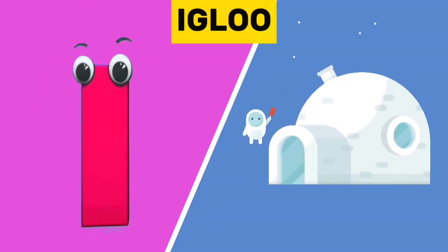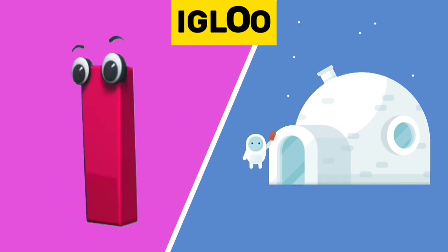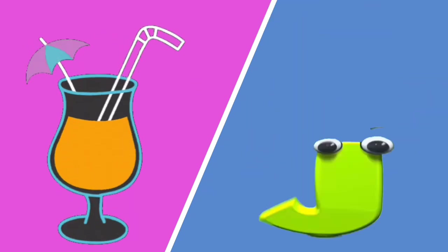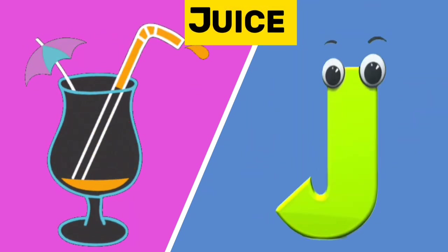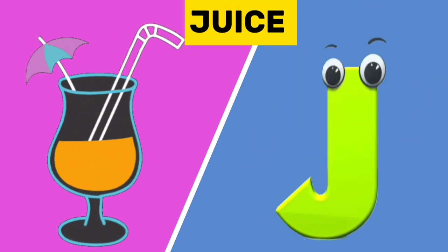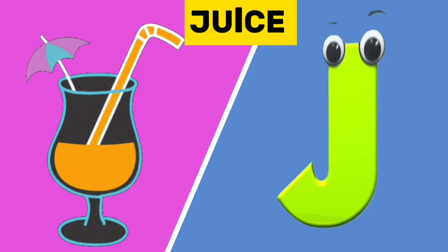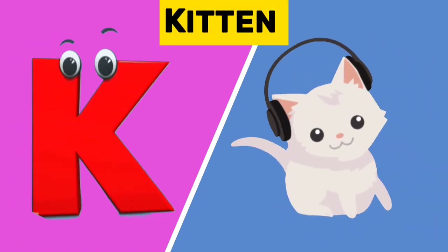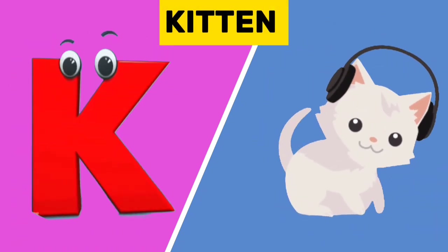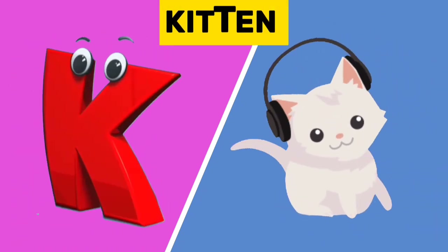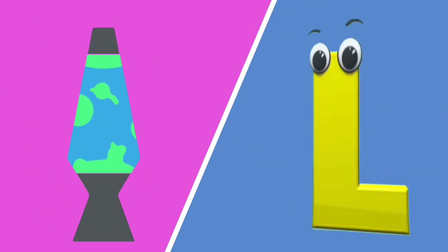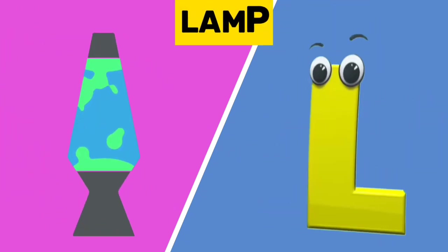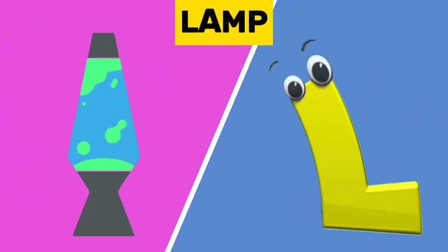I is for igloo. I, i, igloo. J is for juice. J, j, juice. K is for kitten. K, k, kitten. L is for lamb. L, l, lamb.